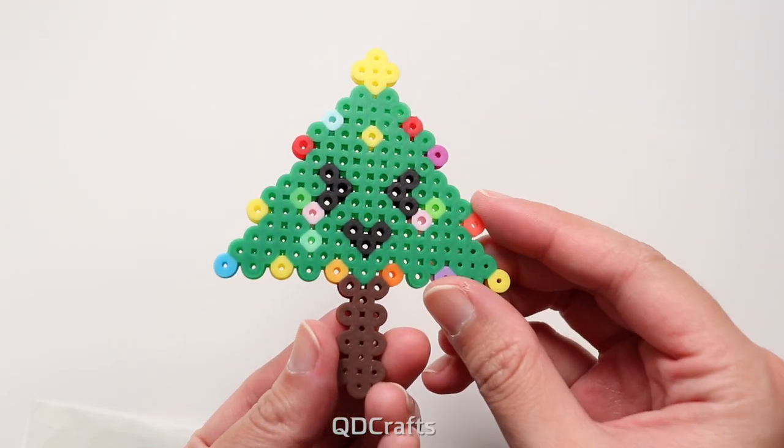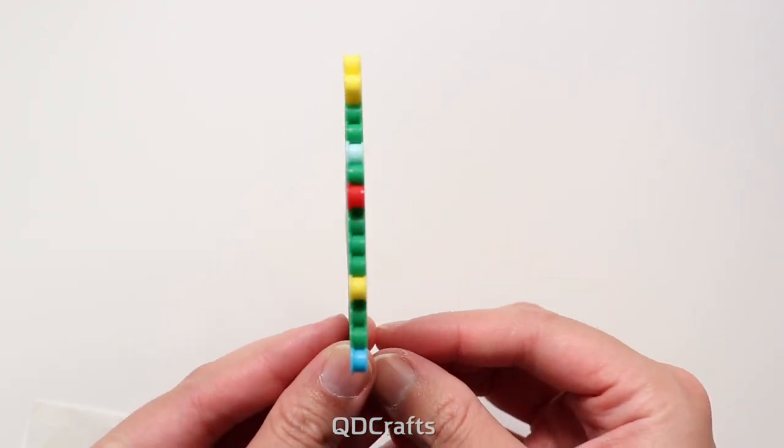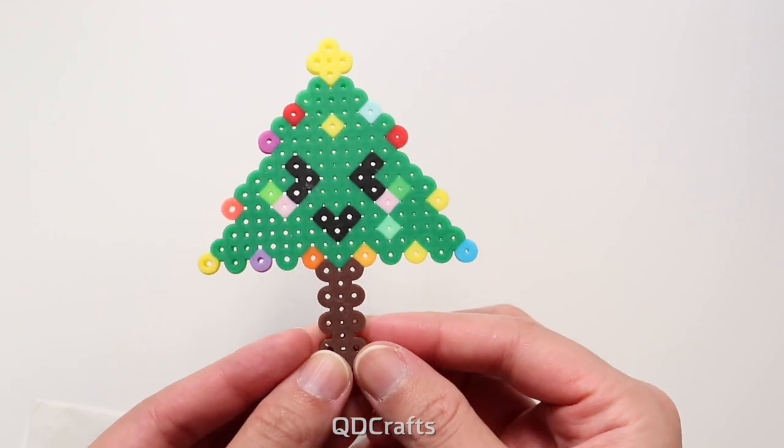This is a fully ironed Christmas tree and I usually leave the beads at around 0.3 to 0.4 centimeters in thickness.